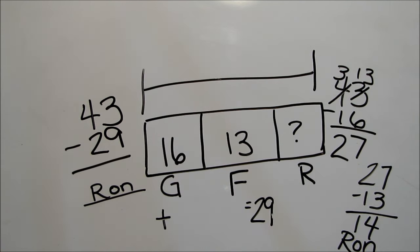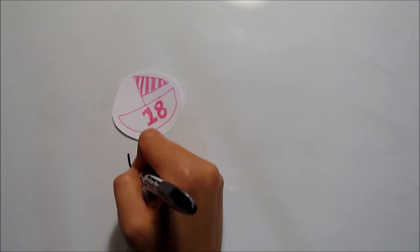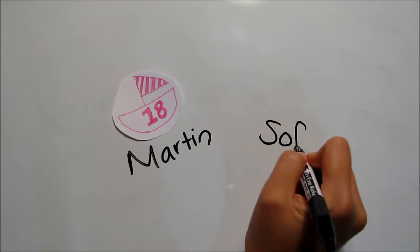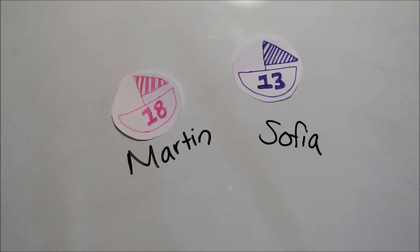Now, sometimes we have a problem that doesn't have parts and wholes. For example, if Martin has 18 toy boats, and Sophia has 13 toy boats, and we want to know how many more boats Martin has.